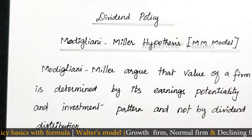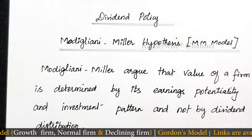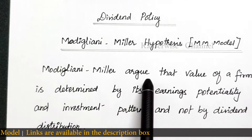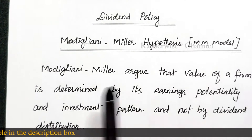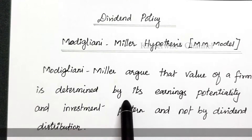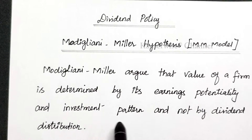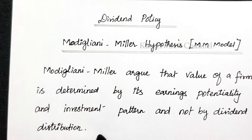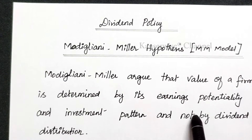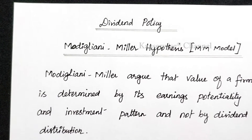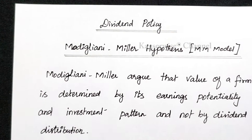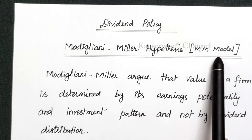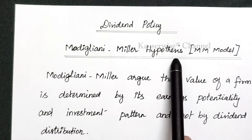Before we see the numerical problem on this concept, let us try to understand the basic concept of MM model. Modigliani-Miller argue that the value of a firm is determined by its earnings potentiality and investment pattern, and not by dividend distribution. So according to them, the dividend decision is irrelevant and it does not affect the market value of equity shares. That is the basic concept of MM model, the Modigliani-Miller hypothesis.